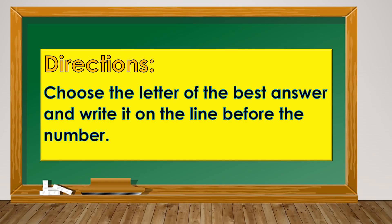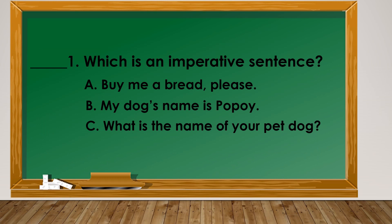Directions: Choose the letter of the best answer and write it on the line before the number. Number 1: Which is an imperative sentence? A. Buy me a bread, please. B. My dog's name is Popoy. C. What is the name of your pet dog? The correct answer is letter A.